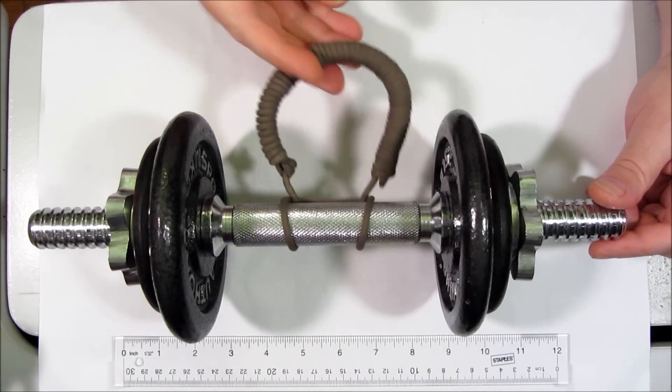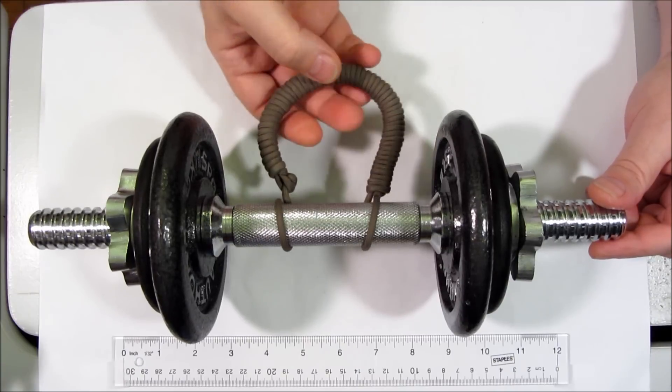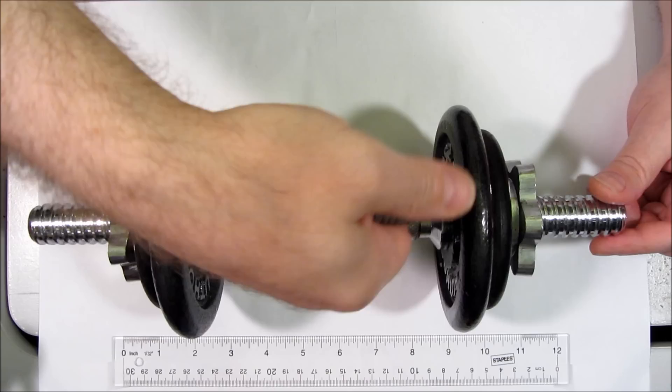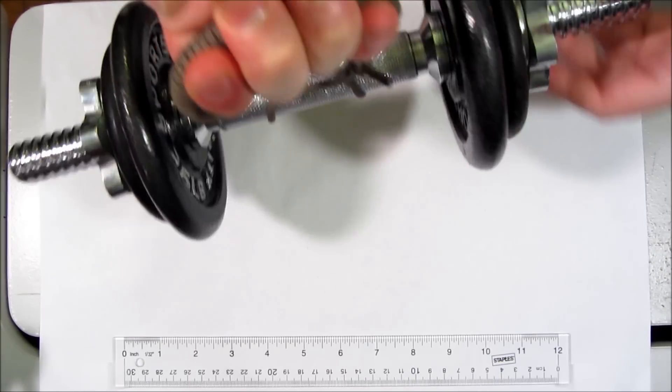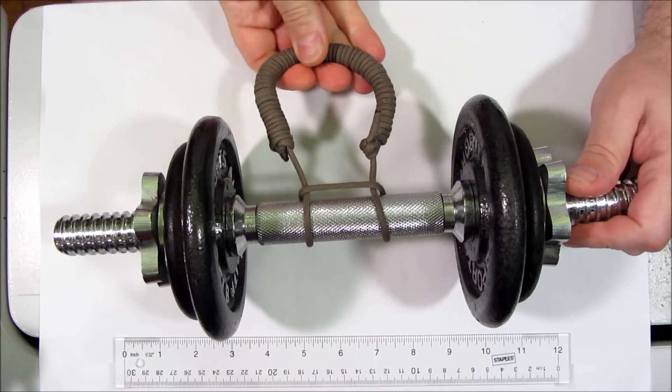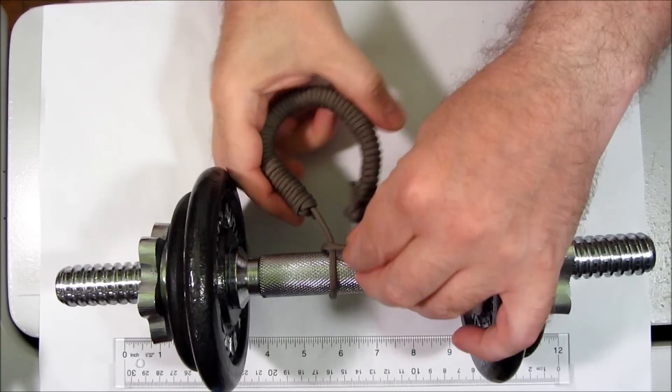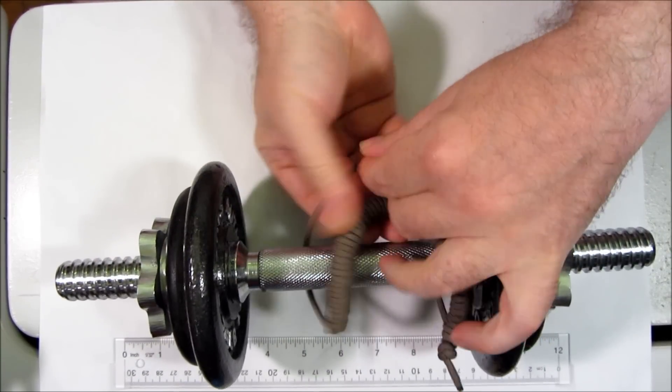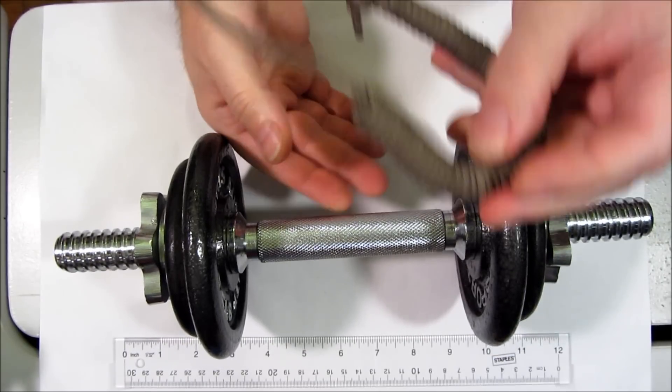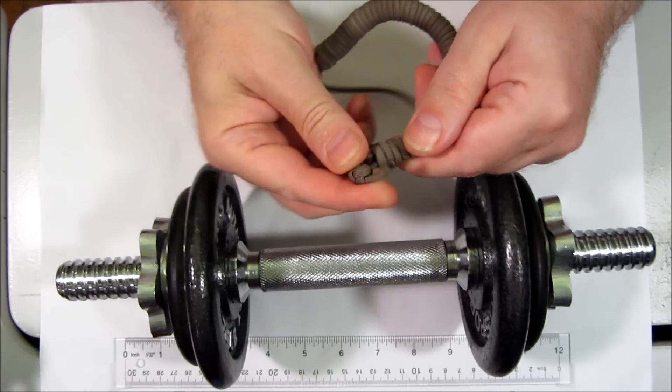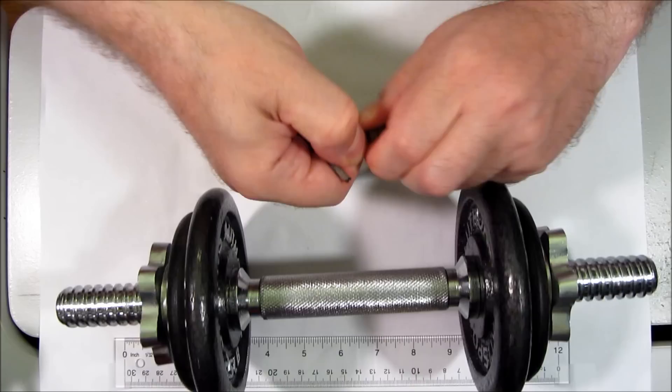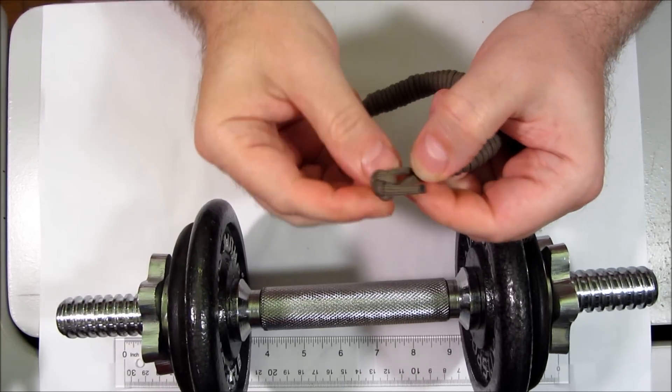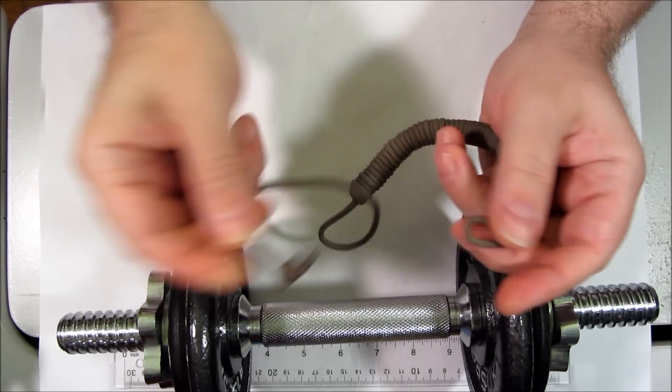You can wrap it as a handle around anything using a girth hitch. You can either undo it by undoing the girth hitch, or you can undo the stopper knot hole by pulling the loop, making it large enough for the stopper knot to escape.